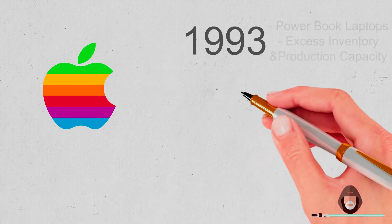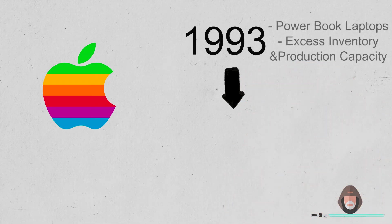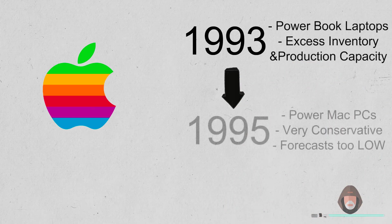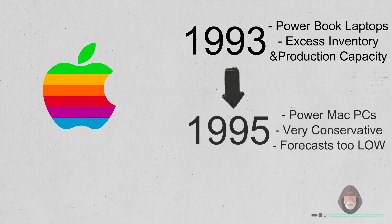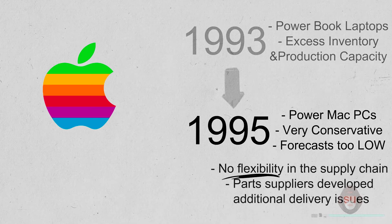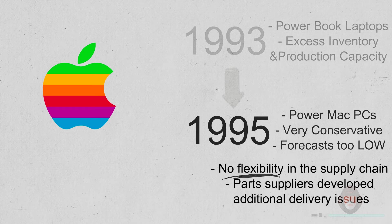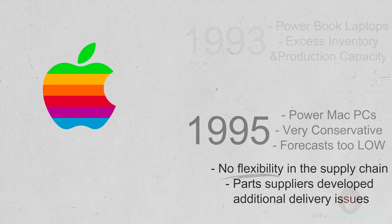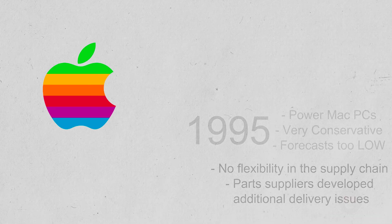Back to Apple's story. In 1993, Apple was burned by excess inventories and production capacity during a similar launch for its power book. So, in 1995, it played things very conservatively as the forecasts were too low. And when they tried to quickly adapt, there wasn't enough flexibility in the supply chain and some parts suppliers developed additional delivery issues.